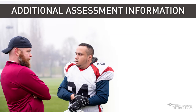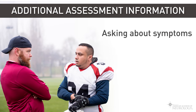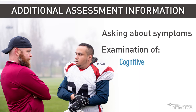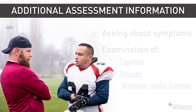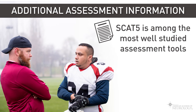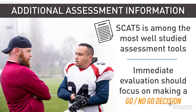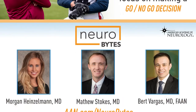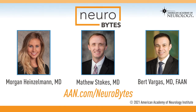Important components of the sideline concussion assessment include asking the athlete about concussion symptoms, followed by examination of cognitive, balance, and vestibular-ocular function. The SCAT-5 is among the most well-studied sideline assessment tools, and there are several other tools available that may aid in decision making. The immediate evaluation of an athlete should focus on making a go/no-go decision for returning to the game. For more information on sideline management of concussion, including recommendations for evaluation and management in the clinic setting, please see the course resources.